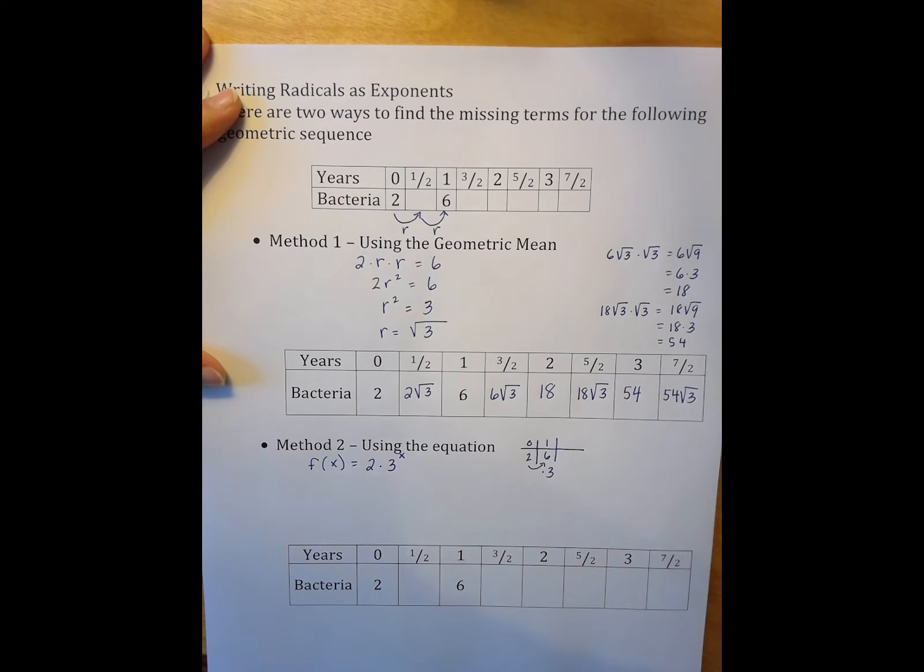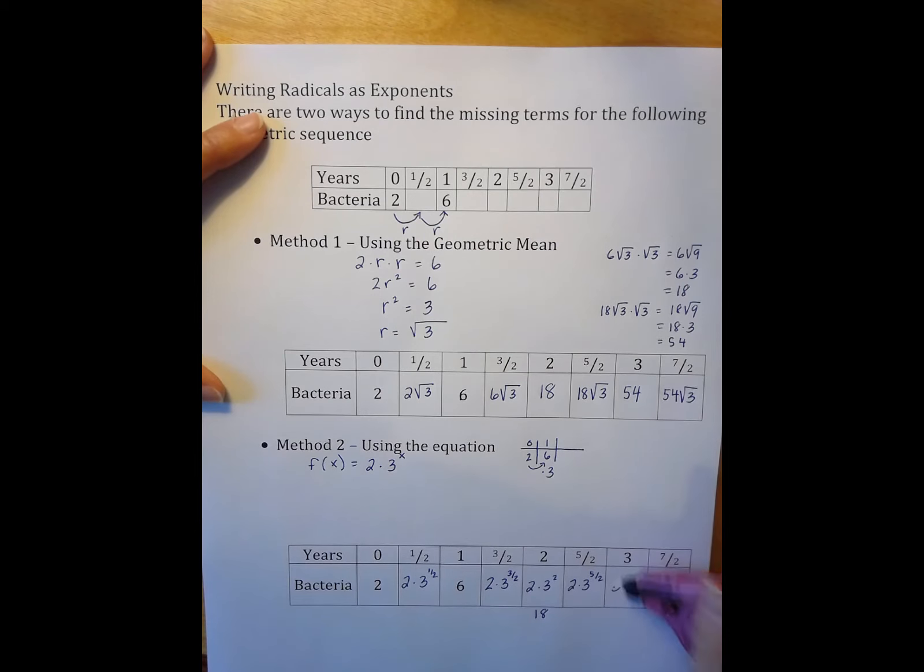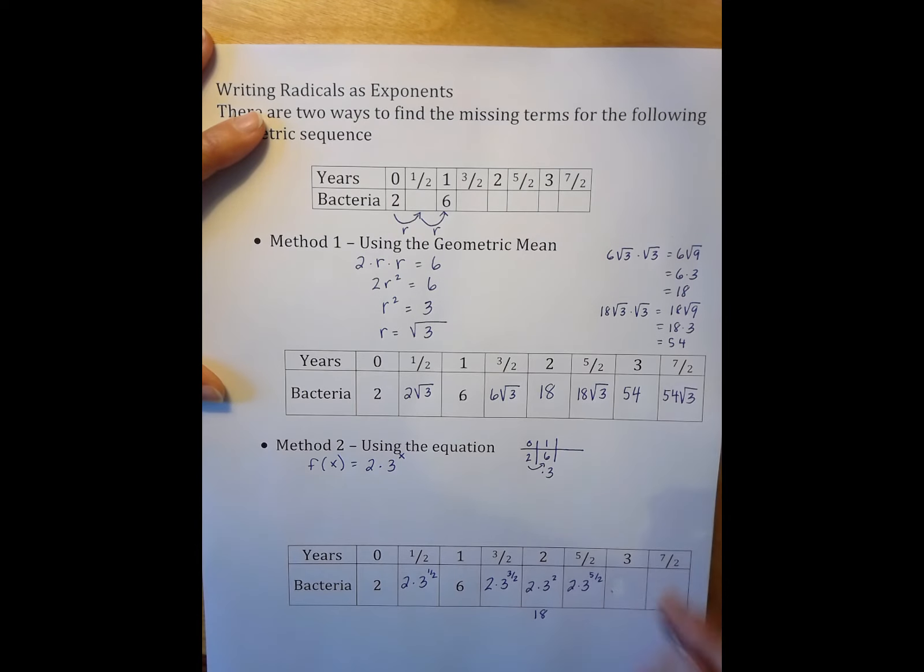That's the equation. So now I can plug in these values into my equation. I have 2 times 3 to the 1/2, 2 times 3 to the 3/2, 2 times 3², which is 18, 2 times 3 to the 5/2, 2 times 3³, which is 54, and 2 times 3 to the 7/2.